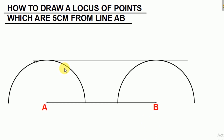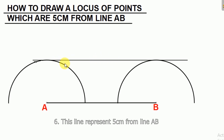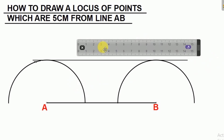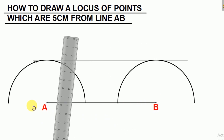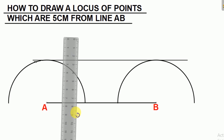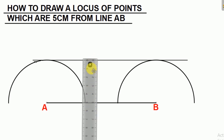Then our last step: this line represents five centimeters from line AB. The line that we have drawn, touching these two semi-circles, is representing five centimeters from line AB. And if you want to prove that, you can get your ruler and measure five centimeters. So if we put our ruler there, as you can see that's zero there, then it's coming to five centimeters. That's what the last step is saying — the line that you draw will represent five centimeters from line AB.